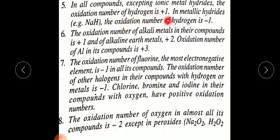Rule 5: In all compounds except ionic metal hydrides, the oxidation number of hydrogen is plus one. In metal hydrides like sodium hydride (NaH), the oxidation state of hydrogen is minus one, because sodium is more electropositive and becomes positive, making hydrogen negative.